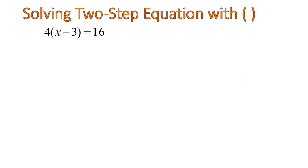Let's look at another equation. With this one, we have the parentheses. We're going to need to use the distributive property. So before we can actually solve this, what we're going to do is distribute that 4 into each term inside the parentheses. So 4 times x is 4x, and 4 times negative 3 gives us negative 12.